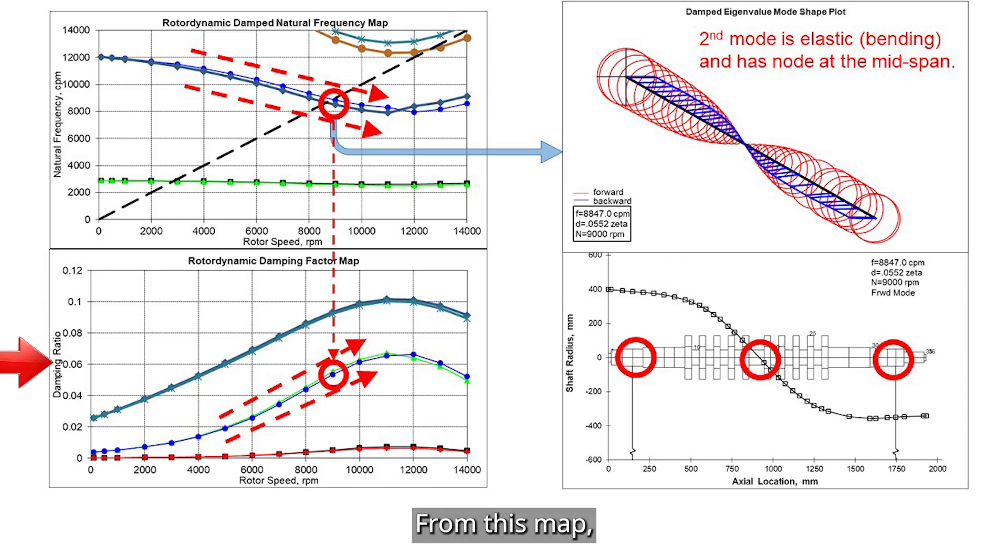From this map, you can see that as rotor speed increases, the damping ratio also increases. This is because as the bearing stiffness drops, the damping becomes more effective.